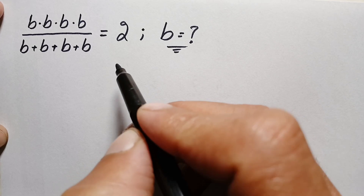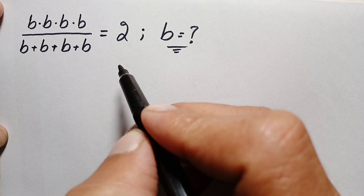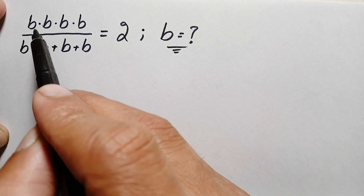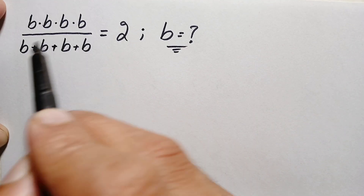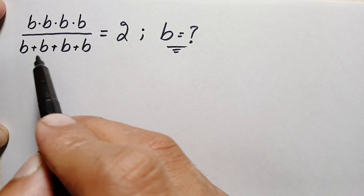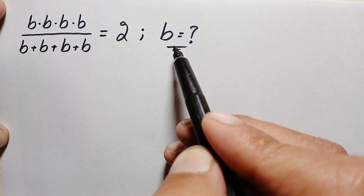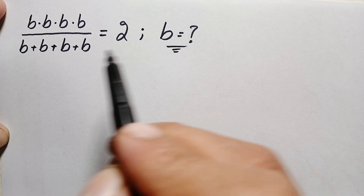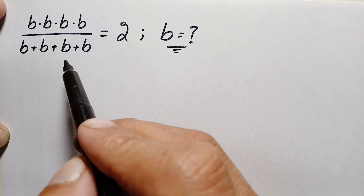Hello everyone, you are welcome. Today we have a very interesting exponential math problem: b times b times b times b is equal to b plus b plus b plus b, which is equal to 2. We will try to find all possible solutions of this beautiful math problem.